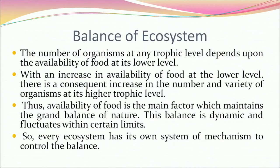The number of organisms at any trophic level depends upon the availability of food at its lower level. With an increase in food availability at the lower level, there is a consequent increase in the number and variety of organisms at higher trophic levels. This availability of food is the main factor maintaining the grand balance of nature. This balance is dynamic and fluctuates within certain limits, and every ecosystem has its own mechanism to control the balance.